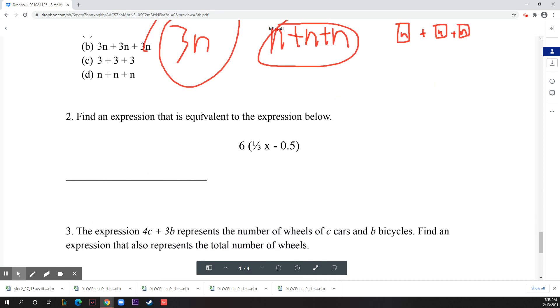Number two: find an expression that's equivalent to the expression below. In this one you just want to distribute, so six times one third is 2x, and then negative 0.5 is actually just negative one half. Then you multiply it by six to get negative three, so 2x minus 3 - that would be an equivalent expression. That's it for this week, have a nice day.